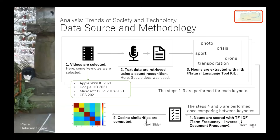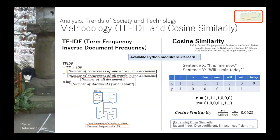At the fourth step, nouns are scored with TF-IDF. At the fifth step, cosine similarities are computed and the results are drawn as a heat map. I explain TF-IDF and cosine similarity after extracting nouns. If you collaborate with data scientists, please remember only the concepts and their purpose. Data scientists must know well the tips to use these technologies, and you will just ask data scientists to do so.